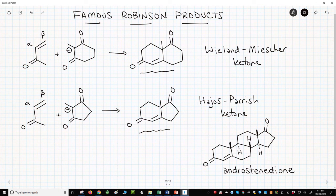The frameworks of these ketones are commonly found in organic synthesis, including as part of the structure of many steroids. The structure of androstenedione is shown in the bottom right. This molecule is also called andro and has been used as a performance-enhancing drug by some athletes.